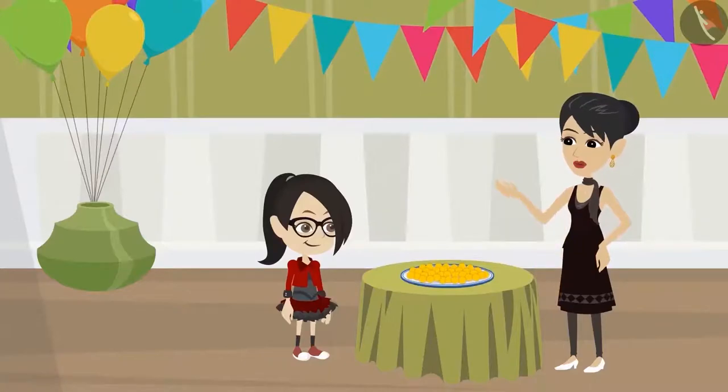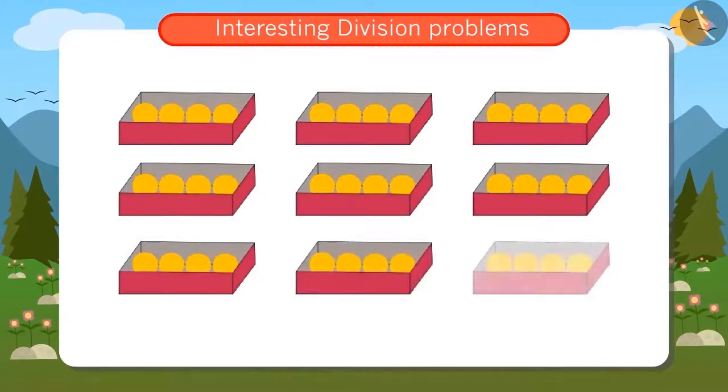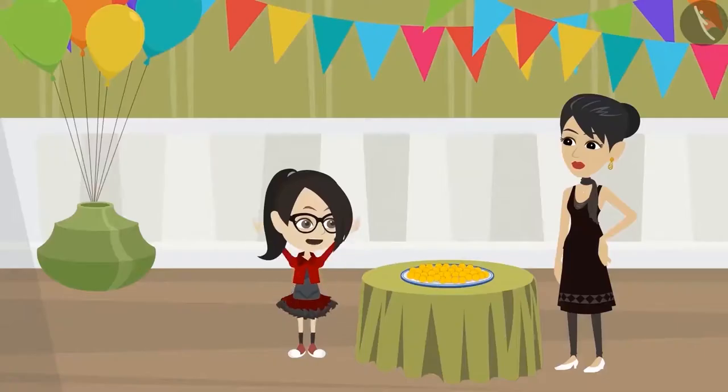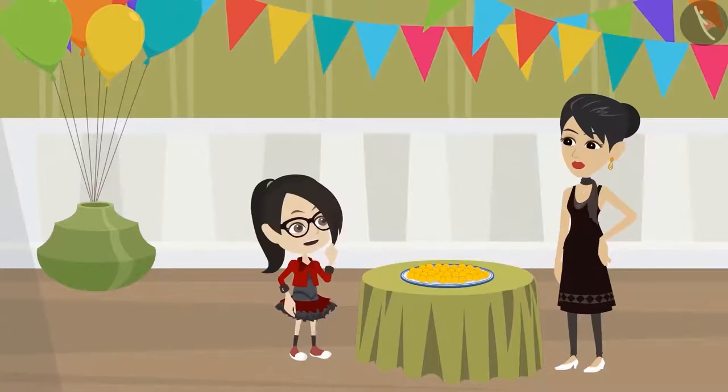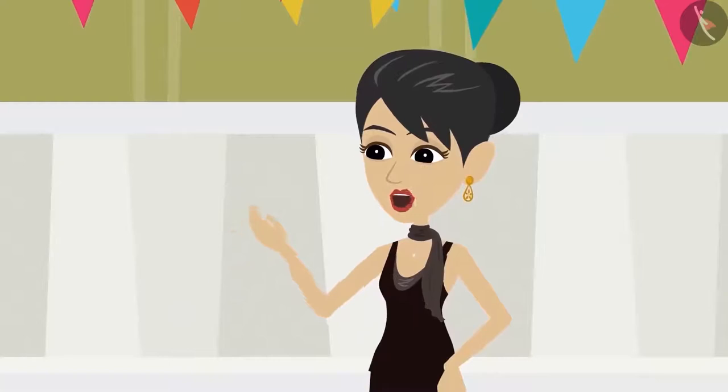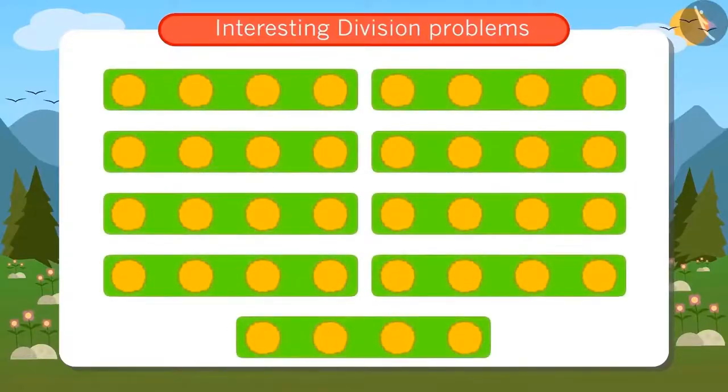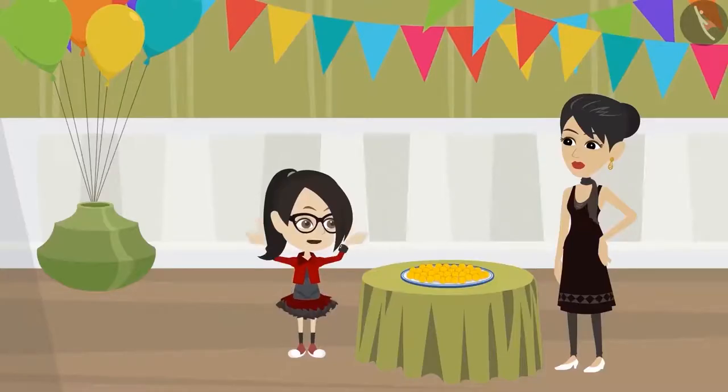Oh, that is very easy. If four laddus come in a box, then nine boxes are needed for thirty-six laddus. Mummy, how did you find the answer so quickly? It took me so long to do it. I used division and found out. How did you do it? I put the laddus in groups of four and then counted the number of groups. But how did you divide it?